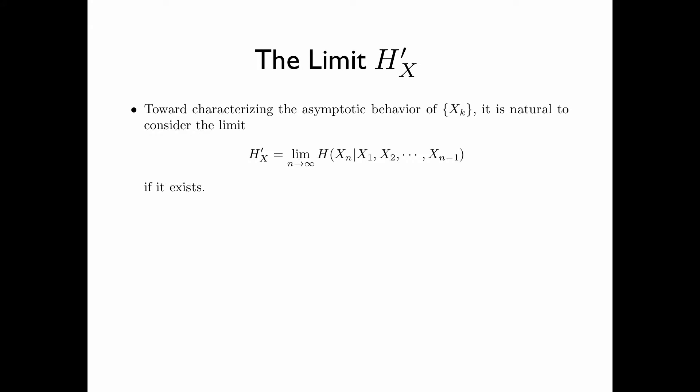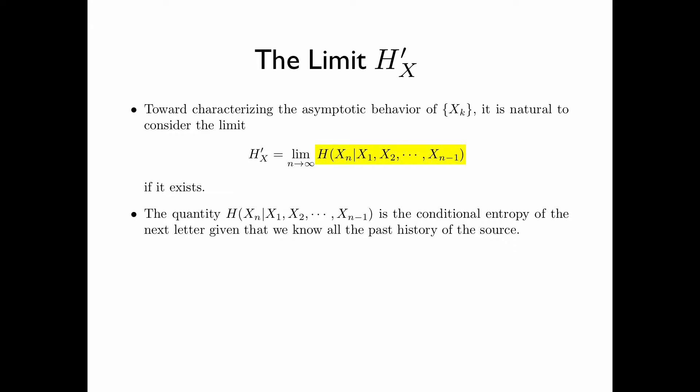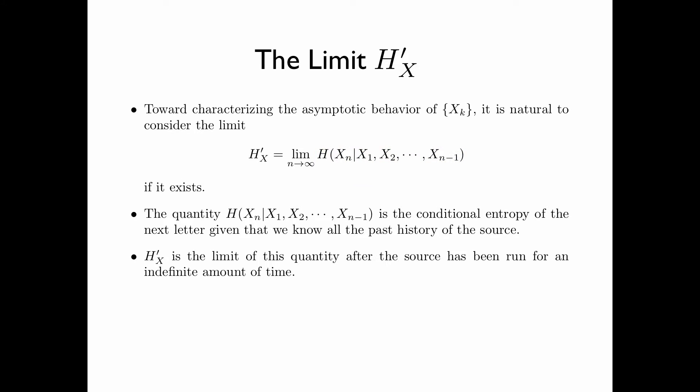Toward characterizing the asymptotic behavior of an information source x sub k, it is natural to consider the limit H sub x prime, defined as the limit as n tends to infinity of the entropy of xn given x1, x2, up to xn minus 1, if the limit exists. The quantity inside the limit is the conditional entropy of the next letter given all the past history of the source. A fundamental question is: is H sub x prime equal to H sub x, the entropy rate of the source?